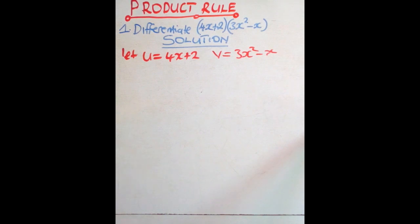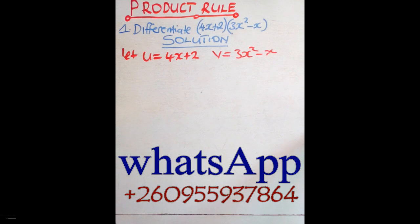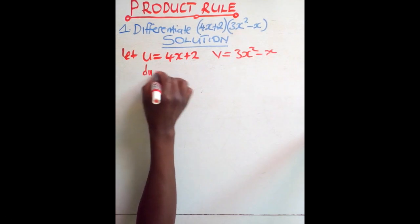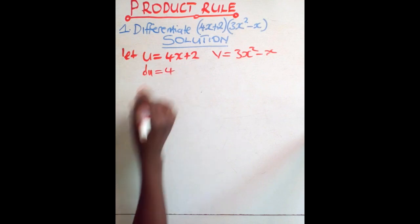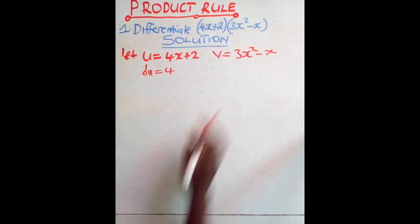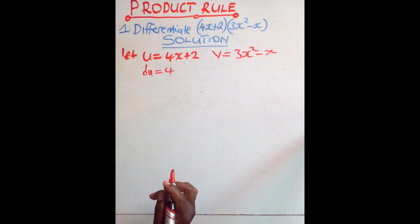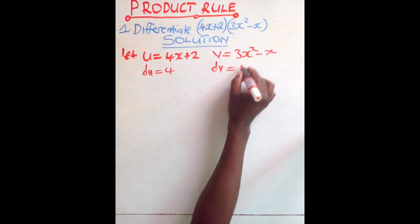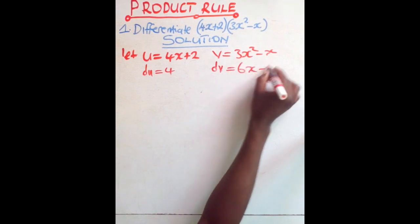When you do that, find du dx. We can say du is equal to 4, which is the same as du dx. Even there, find dv dx, which you can still say dv is equal to 6x minus 1.